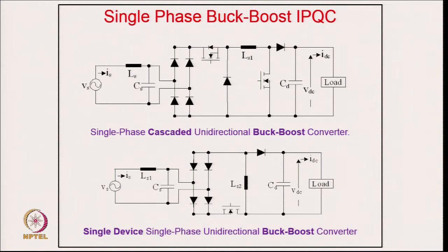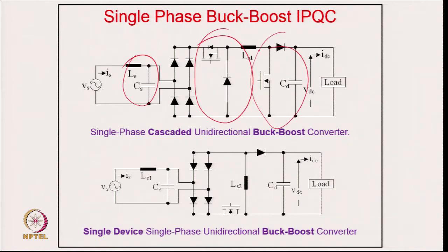Coming to single-phase buck-boost improved power quality converters, the simplest topology is the single-phase cascaded universal buck-boost converter. Here, with an EMI filter, a buck converter is followed by a boost converter, with the inductor shared between both. The benefit of this converter is that voltage stresses on both devices are much lower in this cascaded configuration.